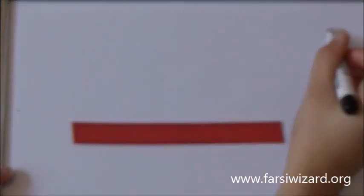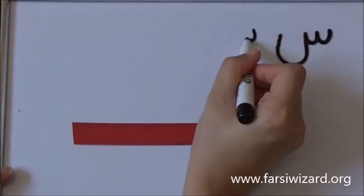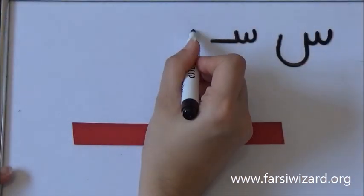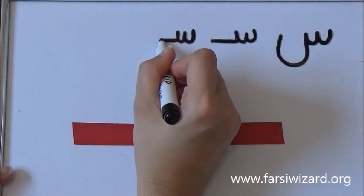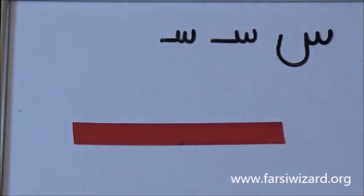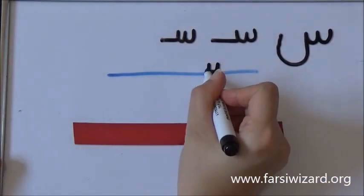So here we have sin, the big version, and sin, the small version. The small version is used when you want to write it in a word. So for example, it has to get connected to another letter after it.